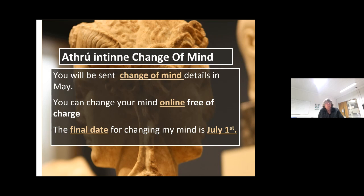The change of mind will open in the first week of May. The CAO will close down after the 1st of February, because they're dealing with all of the restricted courses and contacting the colleges about all of the students that have applied for restricted courses. You cannot put any more courses down after the first week in February. Then in the first week of May, the change of mind opens — you have access to your account to put in any additional courses or take off courses that you've put down, or leave them as they are. No additional charge. The final date for change of mind is the 1st of July.